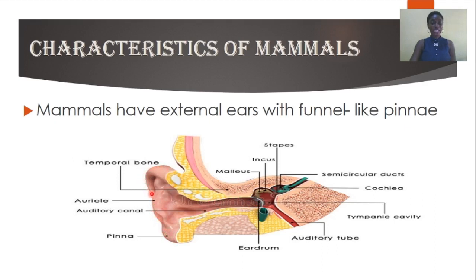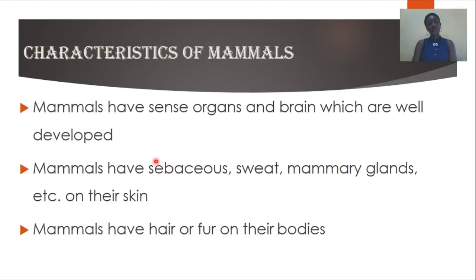So that is one characteristic feature of a mammal — they have external ears with funnel-like pinna. Another characteristic is that mammals have sense organs and a brain that are well developed. In your previous years in JHS and primary school you learned about sense organs. These organs are well developed in mammals so that we can feel and know things much better than other organisms.